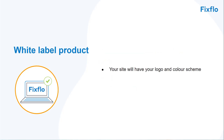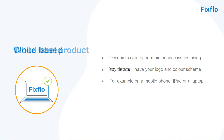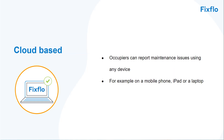FixFlow is a white labelled product, so your site will have your logo and colour scheme, so it won't look like it's come from a third party. It is a cloud-based product, so occupiers can report maintenance issues using any device — for example, a mobile phone, an iPad or a laptop.